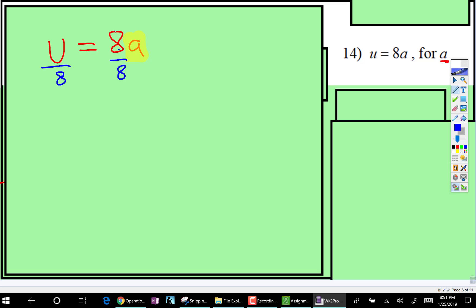8 divided by 8 is 1. So that leaves a. You divide by 8, you would just leave it as u divided by 8. All right, that's it.